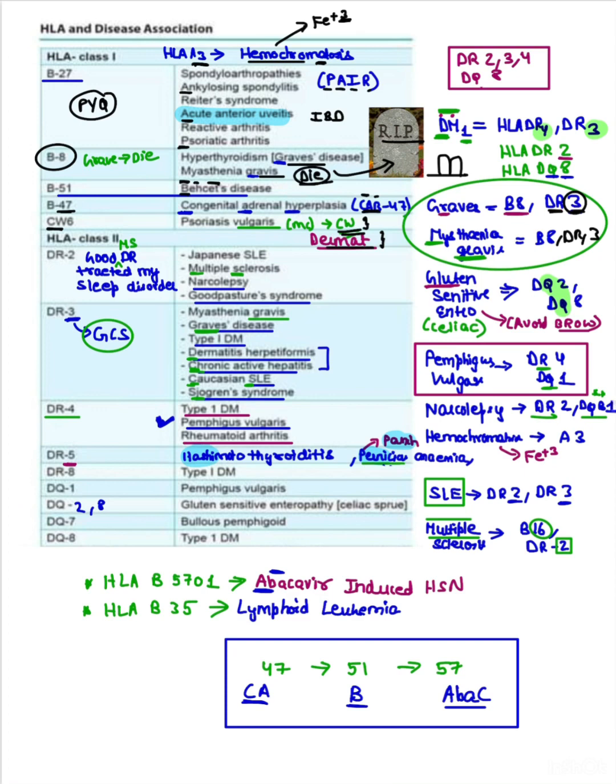Now coming to HLA class 2 associations. We have HLA-DR2. Remember like this: Good doctor treated my sleep disorder. Good means Goodpasture syndrome, DR means associated with DR2, MS means multiple sclerosis, treated my sleep disorder is narcolepsy, treated my fever is hay fever, and treated my rash is SLE.